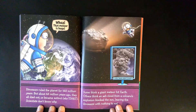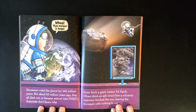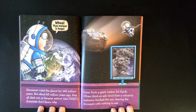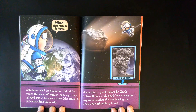Dinosaurs ruled the planet for 165 million years. But about 65 million years ago, they all died out or became extinct. Scientists don't know why. Some think a giant meteor hit Earth. Others think an ash cloud from a volcano's explosion blocked the sun, leaving the dinosaurs with nothing to eat.